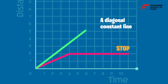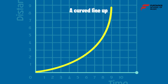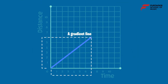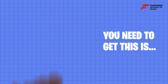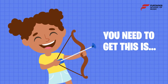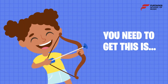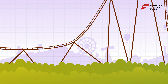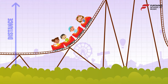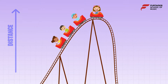In a distance-time graph, horizontal means stop. A diagonal constant line is speed. A curved line up shows acceleration, and a gradient line shows speed of motion. All you need to get this is concentration.